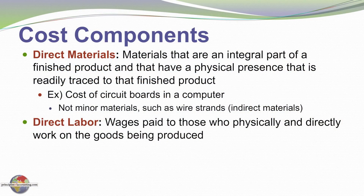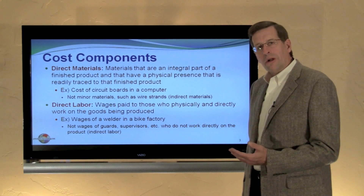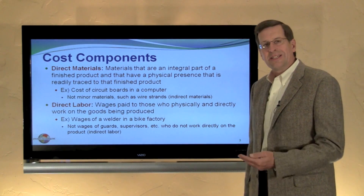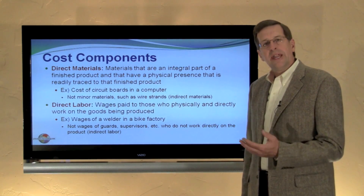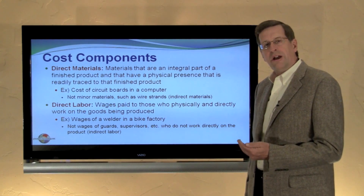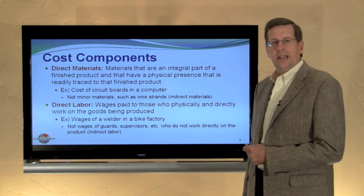Another key cost component is direct labor. Direct labor consists of wages paid to those who physically and directly work on the goods being produced. An example might be the wages paid to a welder in a bicycle manufacturing plant. Importantly, there are many factory workers who don't directly work on a product — their wages are not considered to be direct labor. This could consist of a plant guard, janitorial support, things of that nature. These are important factory costs but not direct labor; those components are considered to be indirect labor.